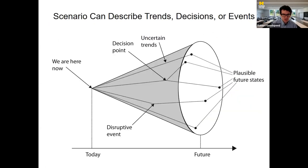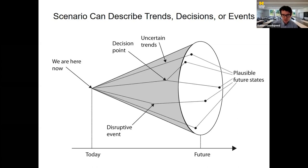In the scenario planning literature there are many versions of what's called either a scenario cone or scenario funnel. The point is that we are at a particular moment in history and time, and there are various plausible futures that may be more or less likely, more or less desirable. The forces influencing which one we reach could be decisions by certain individuals or institutions, disruptive events, or long-term trends playing out like shifts in preference or attitude. The art of scenario planning is creating a set of plausible futures that serve the goals of the particular project.